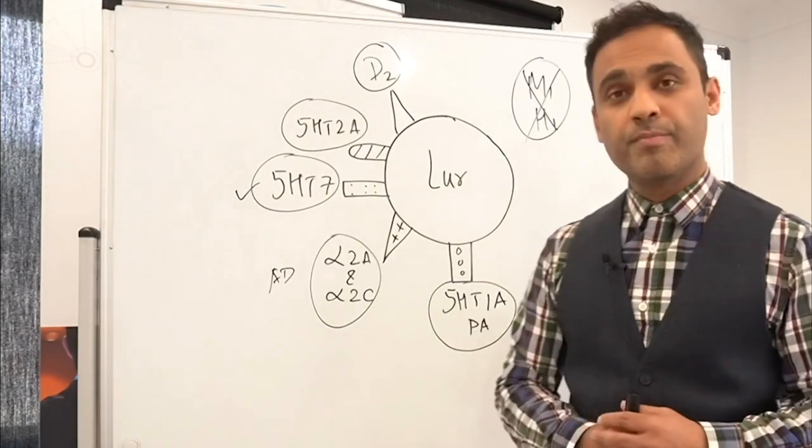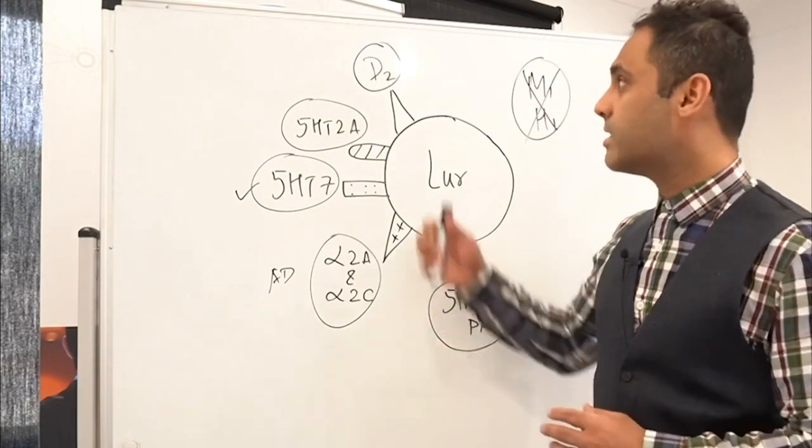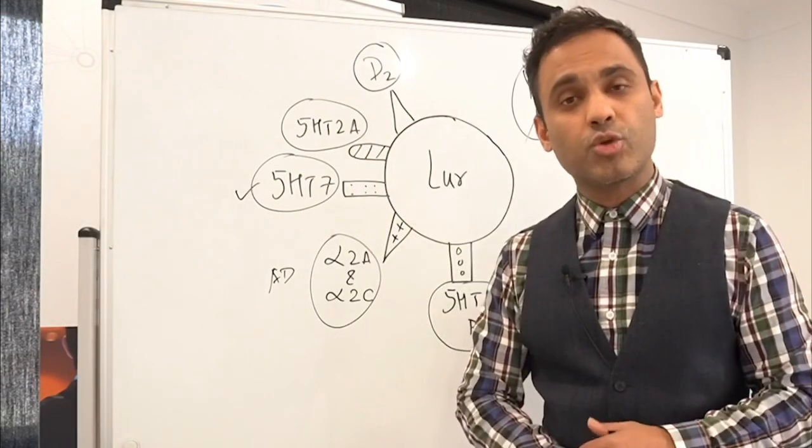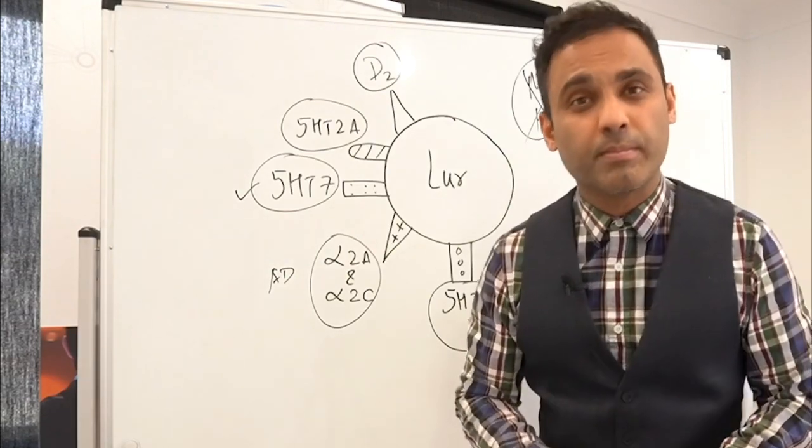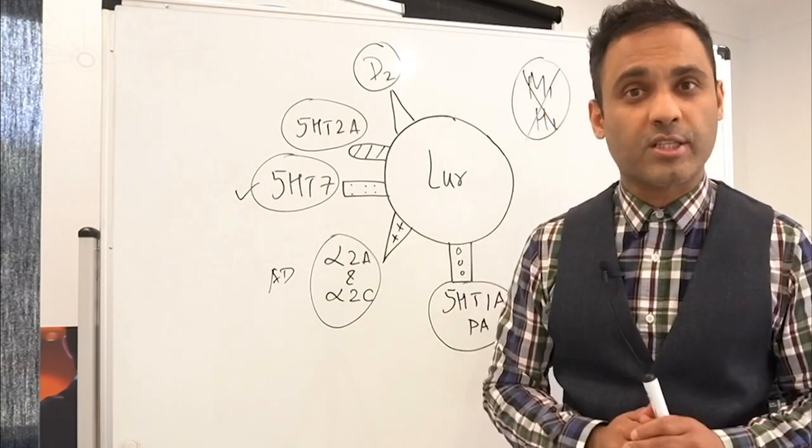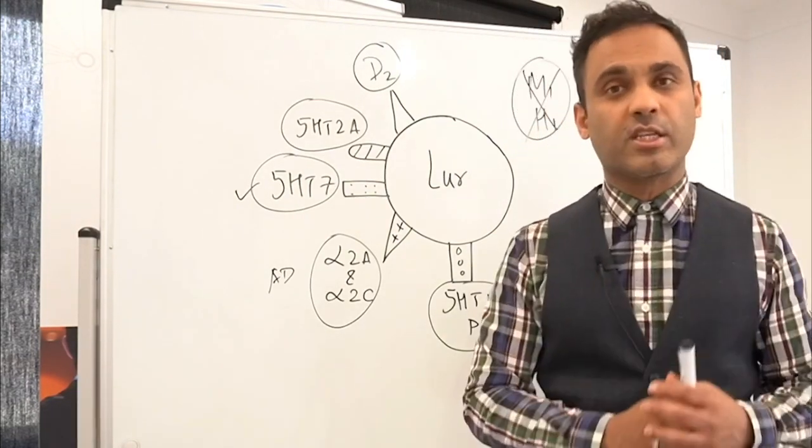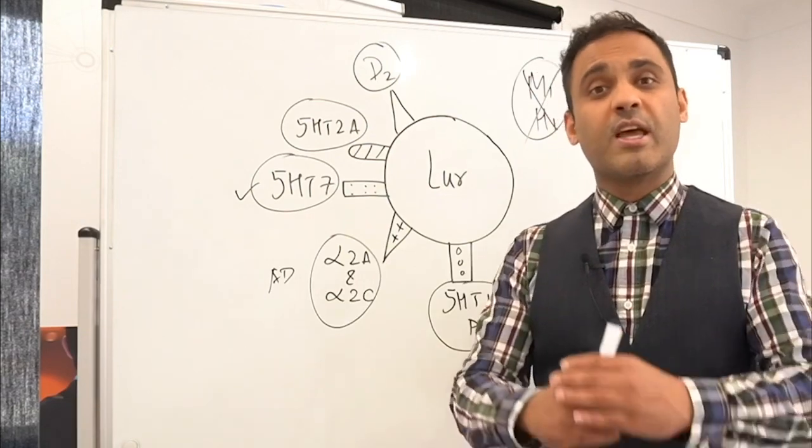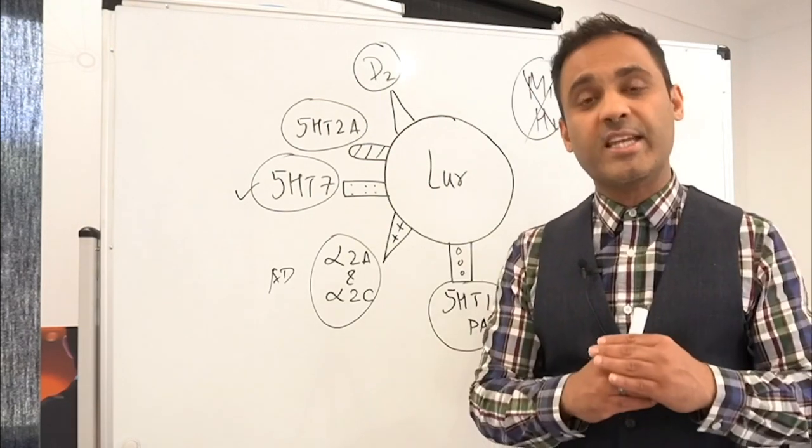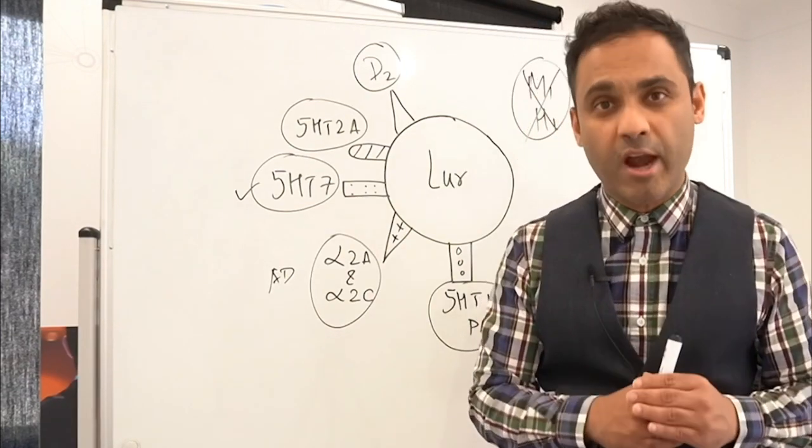Lurasidone, like other atypical antipsychotics besides the partial agonist, has a D2-5HT2A antagonistic property. The D2 antagonism in the mesolimbic pathway treats psychotic symptoms. The 5HT2A antagonism increases dopamine in the prefrontal cortex and the subcortical areas, thereby mitigating any side effects that would occur from D2 blockade in those areas.